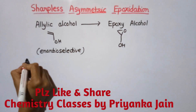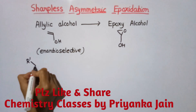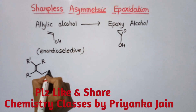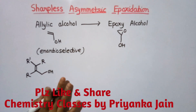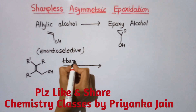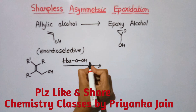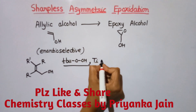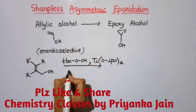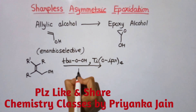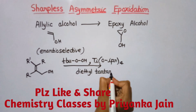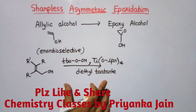Now, what are the reagents involved in this reaction? Suppose we have an allylic alcohol — this is the allylic position and here is the OH group. When it is treated with tertiary butyl hydroperoxide (TBHP) and titanium tetra-isopropoxide — where this is the isopropyl group — in the presence of either isomer of diethyl tartrate...